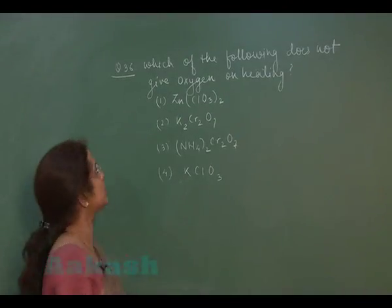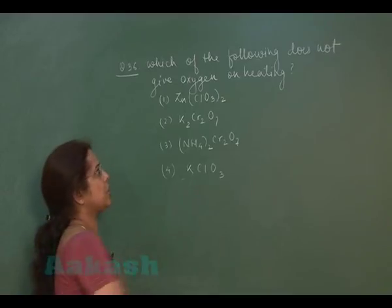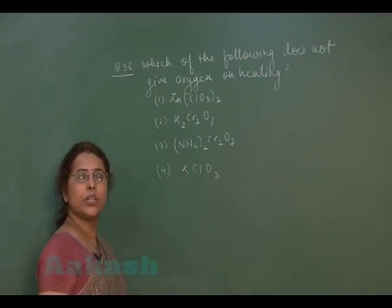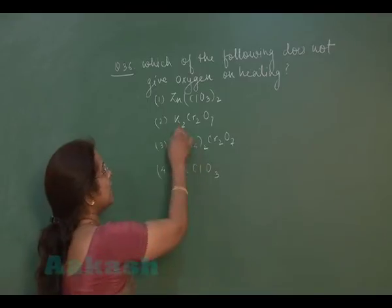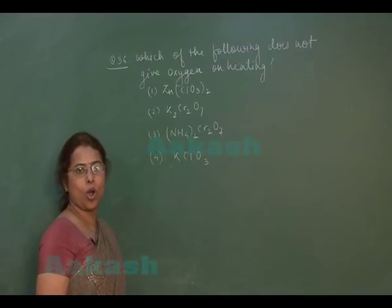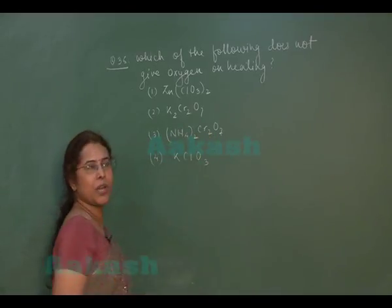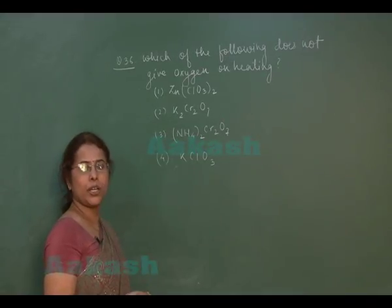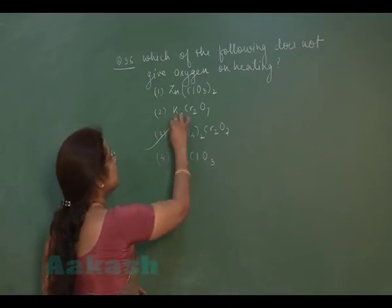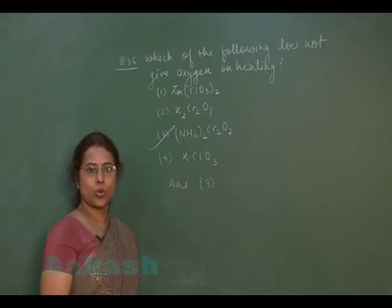Question 36: Which of the following does not give oxygen on heating? This is a fact-based question. Zinc chlorate or potassium chlorate, when they decompose, produce oxygen gas. Potassium dichromate is an oxide of chromium (a heavy metal oxide), so it also decomposes to produce oxygen gas. Ammonium dichromate upon heating produces nitrogen gas, so oxygen gas will not be obtained. The correct answer is the third option.